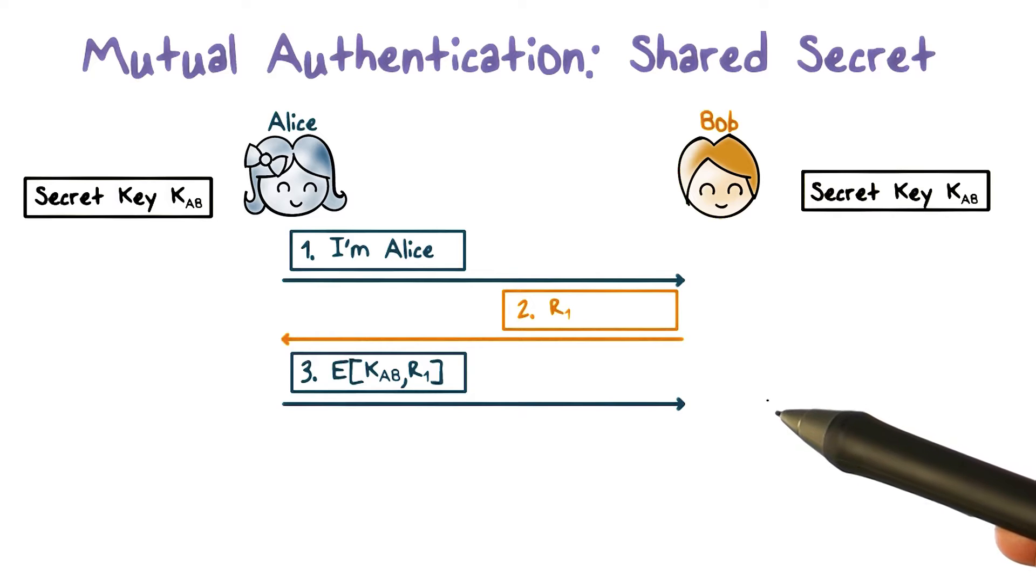Third, Alice then encrypts R1 using the shared key KAB and sends Bob the ciphertext, which we call the response to the challenge. When Bob receives the response, he decrypts it and sees if it matches the plaintext R1 that he just sent to Alice.